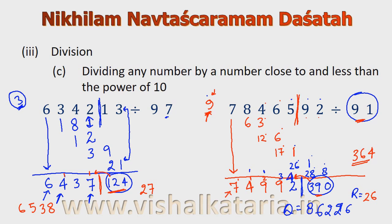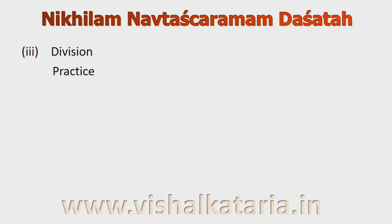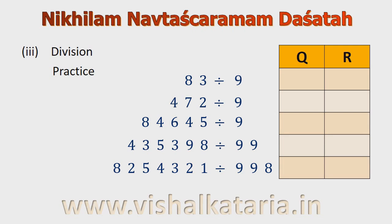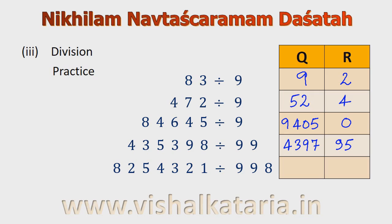That was all about Nikhilam division. Now I have a few questions for you to practice. Pause this video and try to solve all these problems as quickly as possible. Let's verify the quotients and remainders: 1st question, quotient 9, remainder 2. 2nd: 472 divided by 9, quotient 52, remainder 4. 3rd: quotient 9405, remainder 0. Next: quotient 4397, remainder 95. And the last one: quotient 8270, remainder 861.